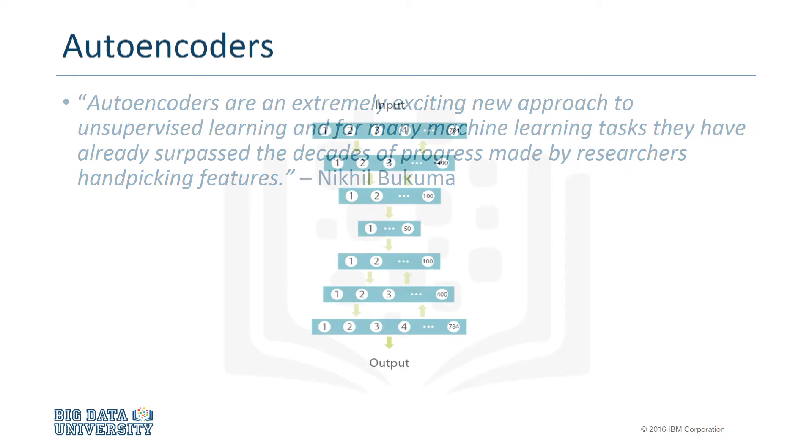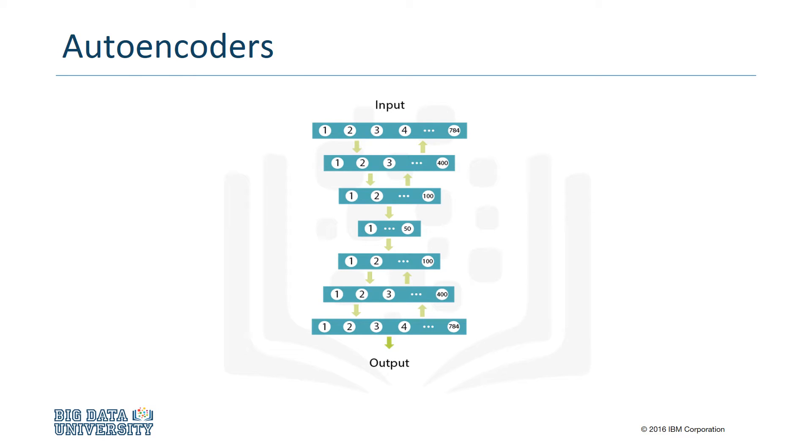An autoencoder is also known as an autoassociator or a Diablo network. It's an artificial neural network that's designed to recreate the given input. They differ from restricted Boltzmann machines because they use a deterministic approach rather than a stochastic approach.